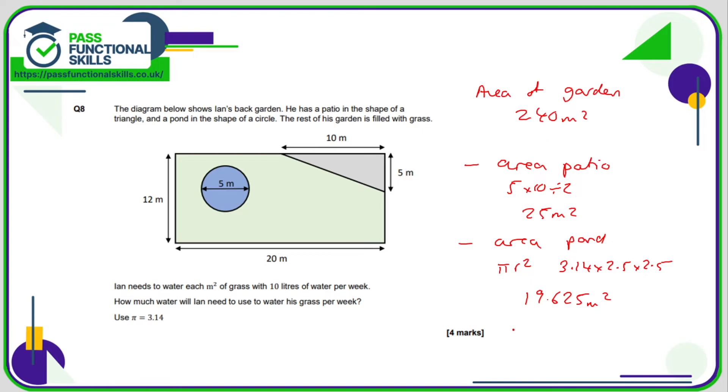Therefore, the area of grass is 195.375 square meters. And Ian needs to water each square meter with 10 liters per week. So how much water will he need to water his grass per week? Well, it's just simply this figure here multiplied by 10. That's quite easy, so it's just 1953.75 liters.